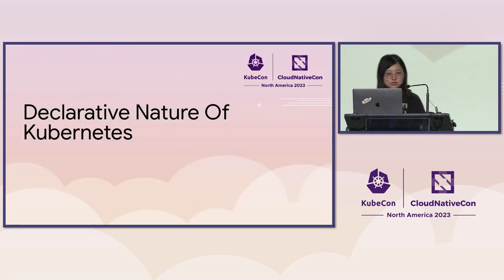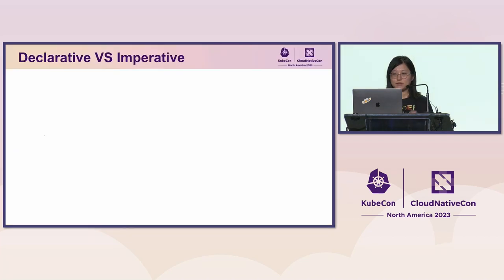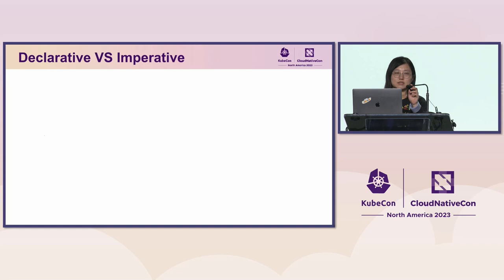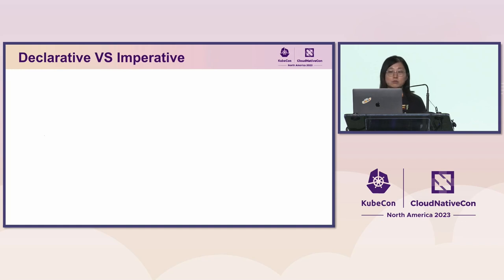Let's start with the declarative nature of Kubernetes. First, let's begin with the very basic concept of declarative versus imperative. I know most of you might already be familiar with the concept, but in short: declarative is when you say what you want, while imperative is when you say how to get what you want.